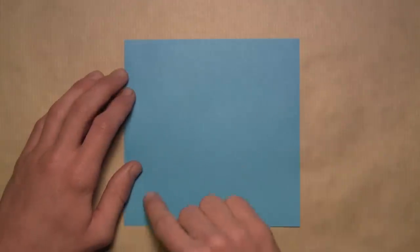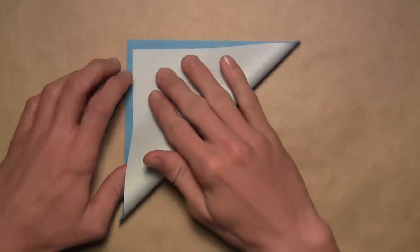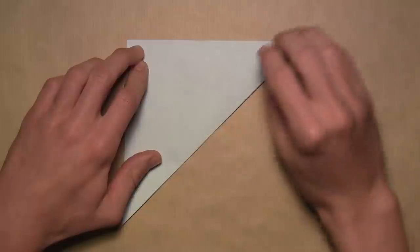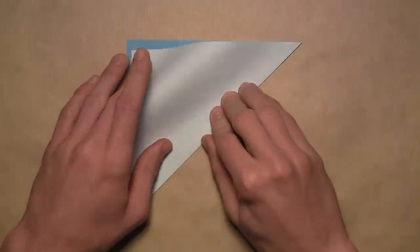We're going to start by folding in half diagonally, so take this bottom right corner and fold it up to the top left corner. Align the corners and the edges, then make your crease, and then unfold.